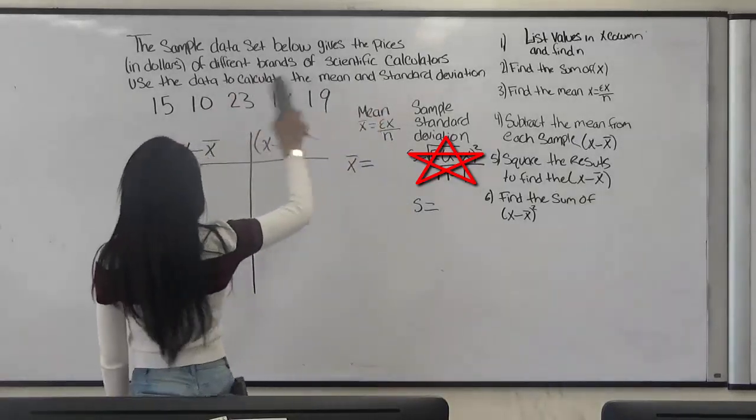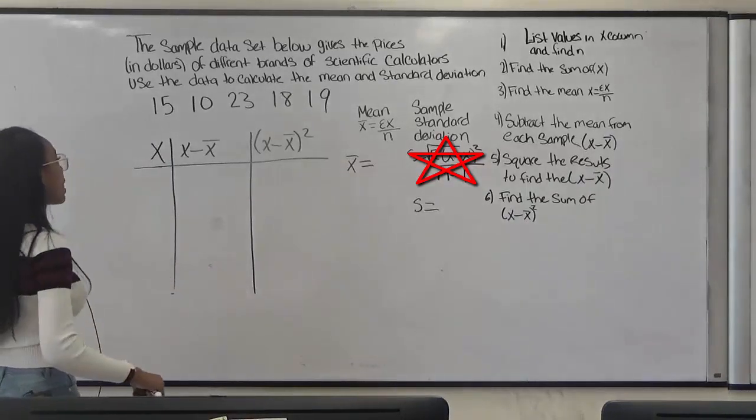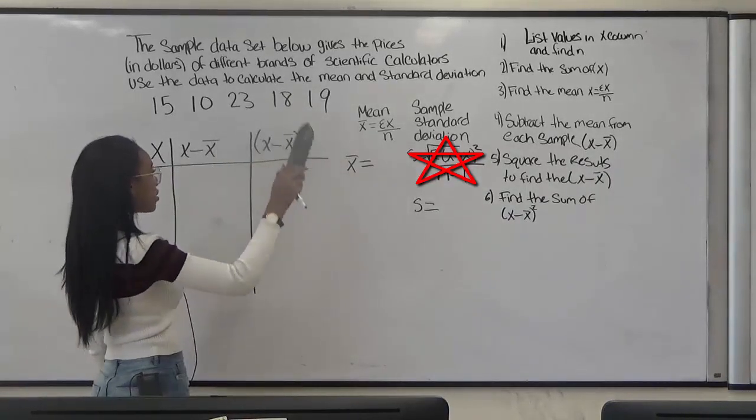The sample data set below gives the prices in dollars of different brands of scientific calculators. Use the data to calculate the mean and the standard deviation.